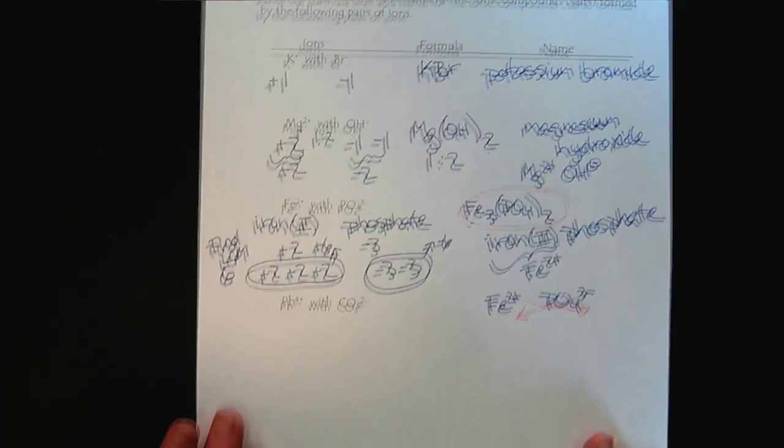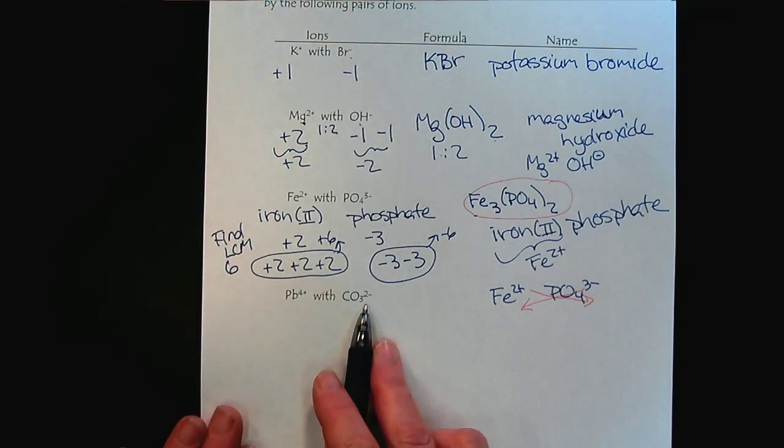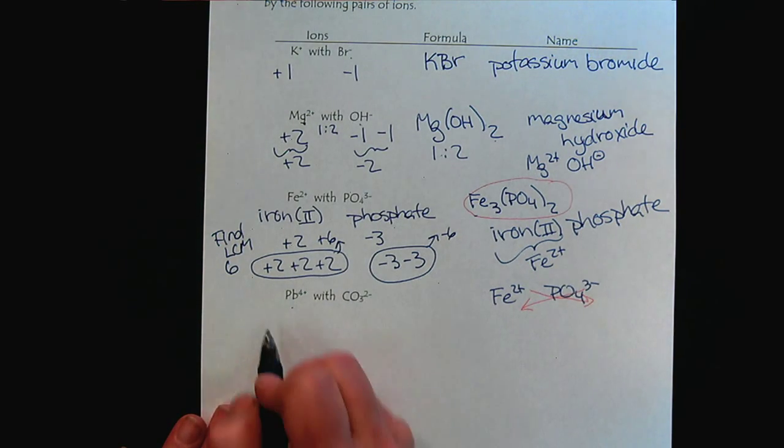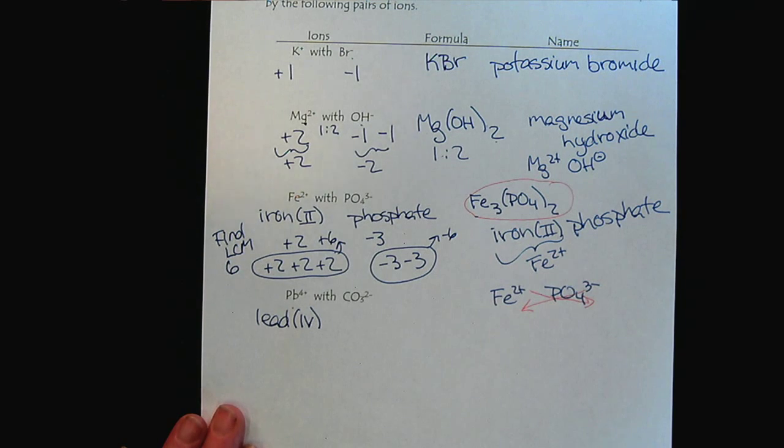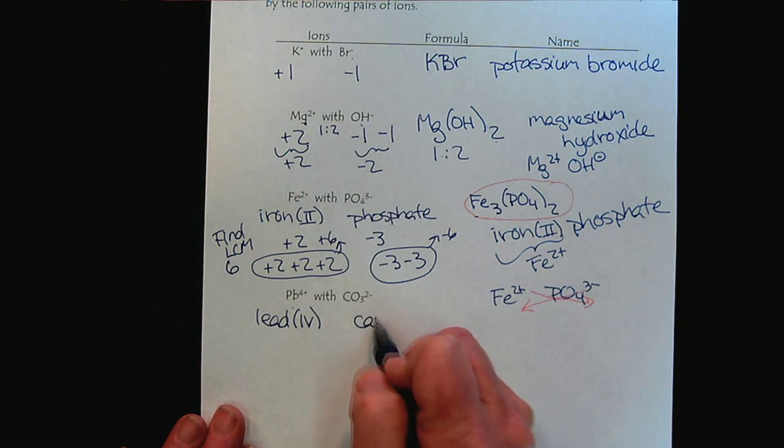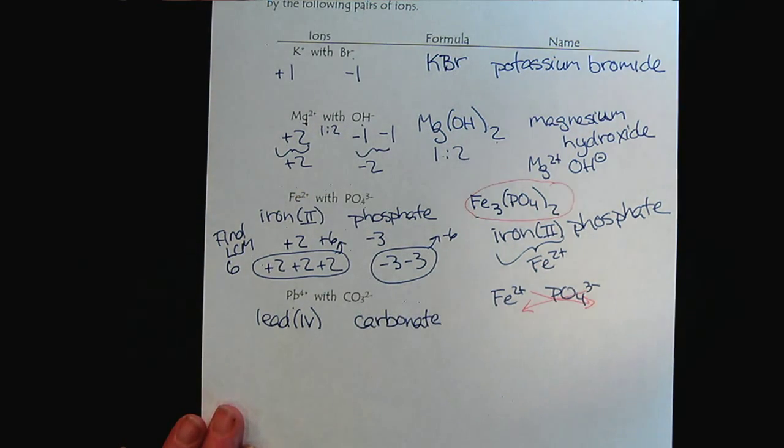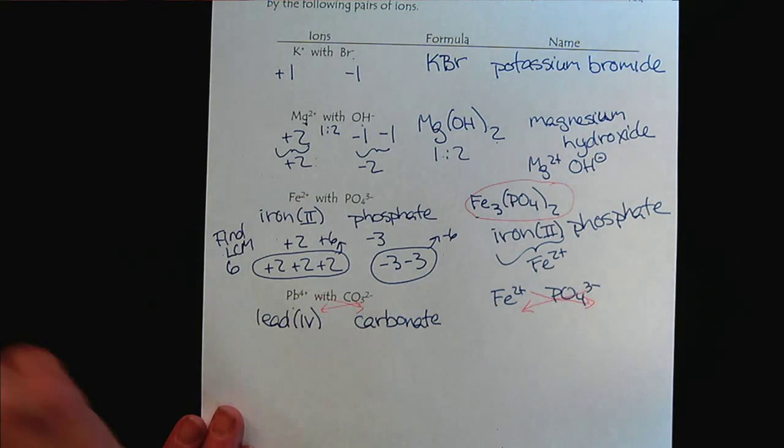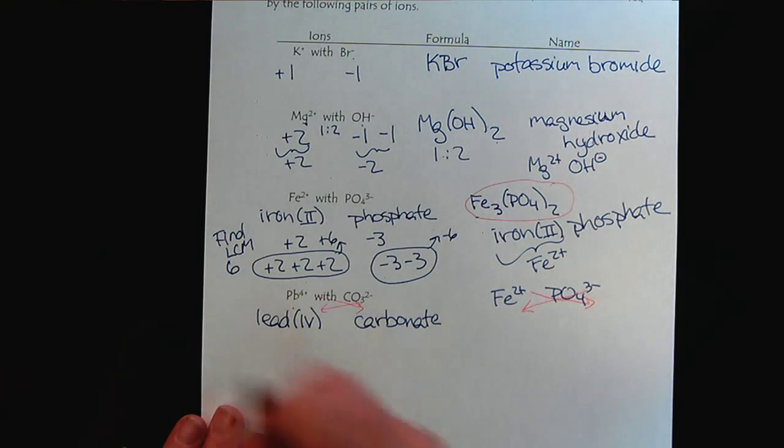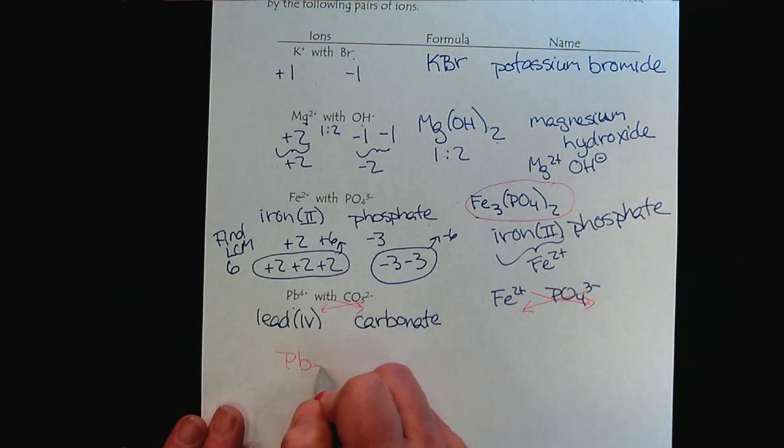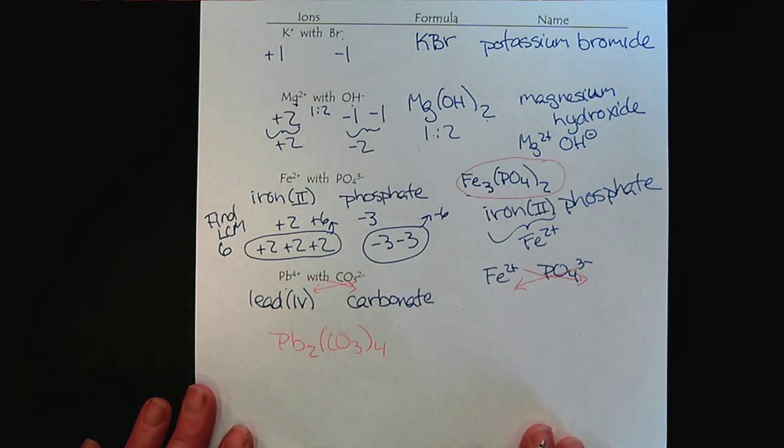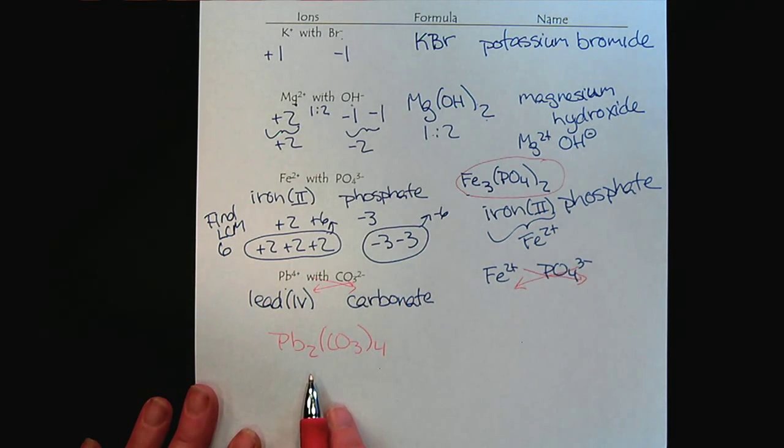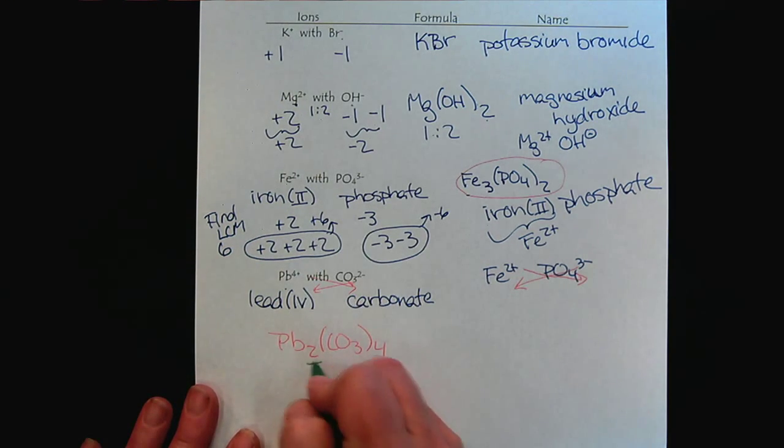But here is an example where it does not work. If we try to use the criss-cross method here, we have lead 4. And remember, lead is an element that has more than one oxidation state. So, we have to include the Roman numeral. And then there is our buddy carbonate. So, in this case, if we tried to use the criss-cross method, we would end up with 2 phosphates and 4 carbonates. Now, this is not a correct chemical formula. Why? Because we always want to have the smallest ratio of whole numbers.